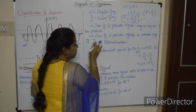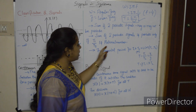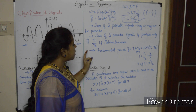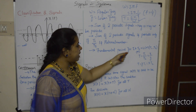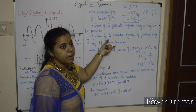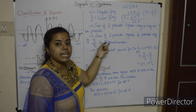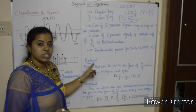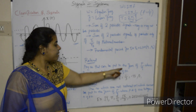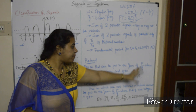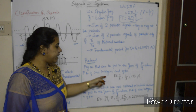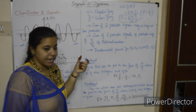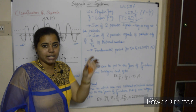T1 and T2 are the fundamental time periods of the two signals. The ratio T1/T2 must be a rational number for the sum to be periodic. If it is an irrational number, it is non-periodic. A rational number is any number that can be expressed in the form p/q where p and q are integers and q ≠ 0 — the ratio of two integers.